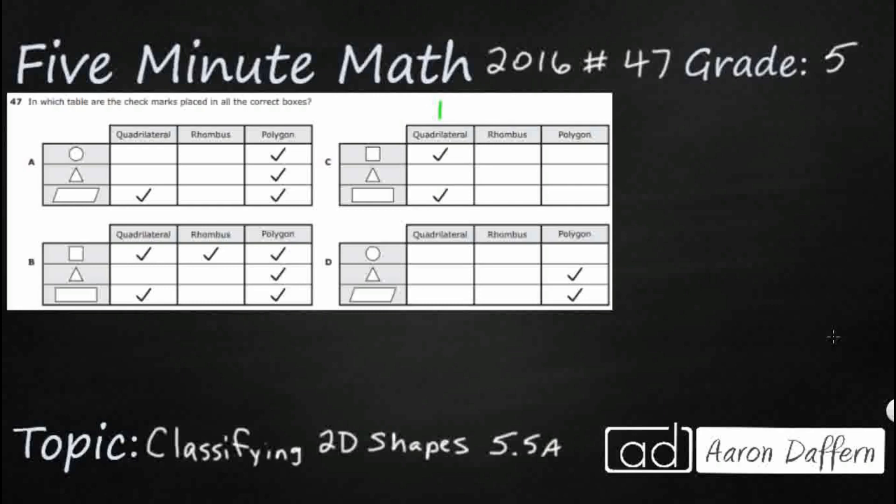We need to find which table has check marks placed in the correct boxes, and each table has these three: quadrilateral, rhombus, and polygon. For us to understand that, we need to see that there are actually three different levels here.